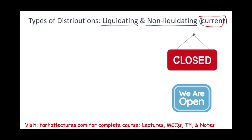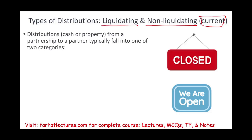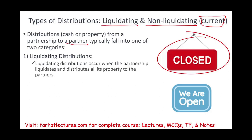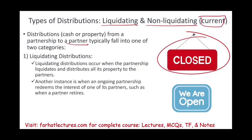What is the difference between the two? In both situations, you can distribute cash or property. Liquidating distribution is simply when the partnership liquidates and distributes all properties to the partners — basically, the business is going out of business, it is closing. Another form of liquidating distribution is when a partner redeems their interest, such as in the case of retirement. That is also called a liquidating distribution.